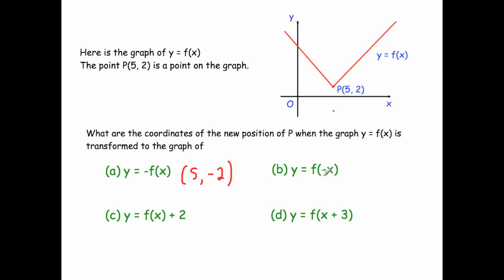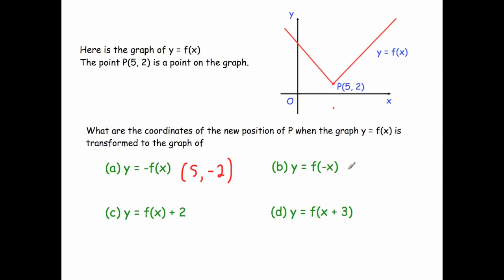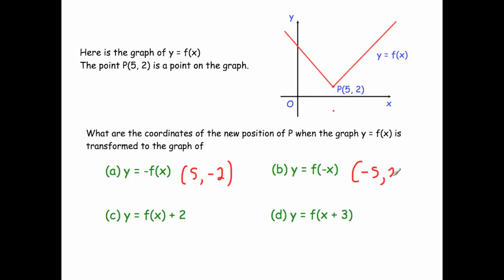Next, y equals f of minus x. That's a reflection in the y-axis — it flips horizontally. So instead of 5 to the right and 2 up, it becomes 5 to the left and 2 up: the point moves to (-5, 2). Then, y equals f of x plus 2 moves the graph two squares up, so (5, 2) becomes (5, 4).